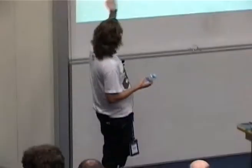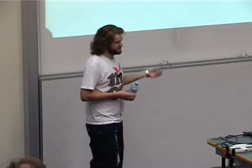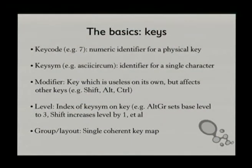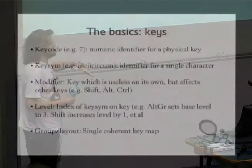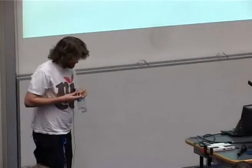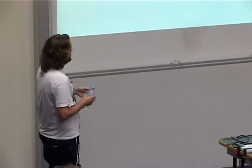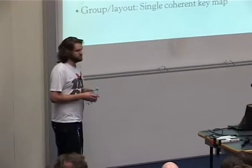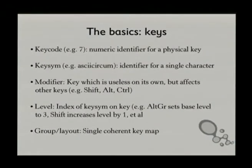So the very basic terminology: a key code is just a numeric identifier for a single physical key. A key sym is a single character, such as uppercase Q, circumflex, whatever. We have tens of thousands — lots of them overlapping and pointless. A modifier is something that affects what other keys do. Shift is pretty useless on its own, but kind of handy in combination with Q. We look at every key as having a set of symbols indexed by the level. Shift bumps your level up by one. Alternate group might bump it up by two or so. A group is all of these, and a layout is all of these things mashed together into a coherent key map.